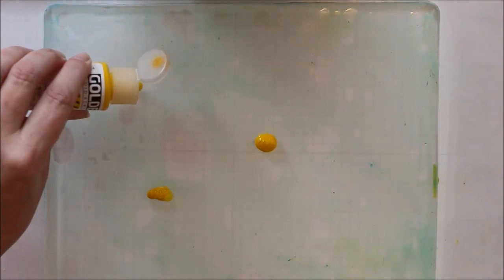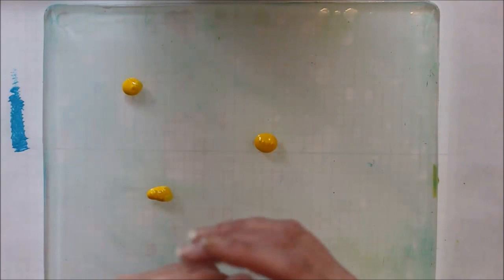Next, I'm going to try golden fluid acrylics. As the name implies, they're a little bit thinner. You get a little bit more transparency than you do with acrylic paint from the craft store, so you'll just have to experiment with the different paint mediums and see what you like.